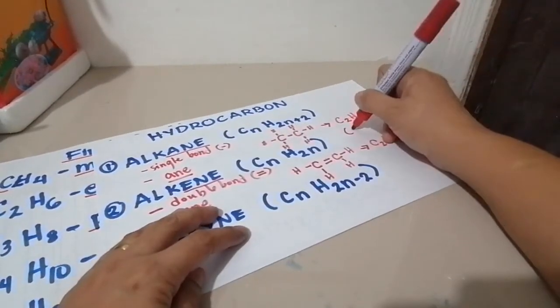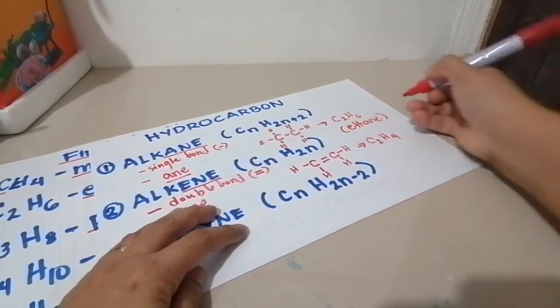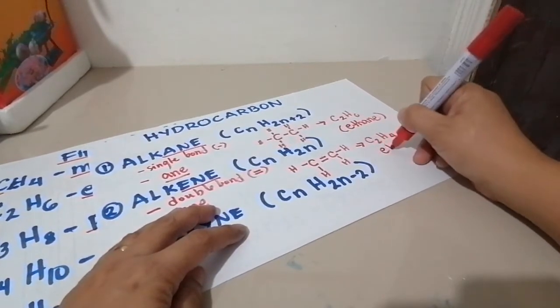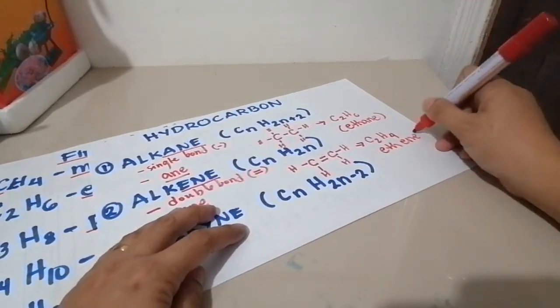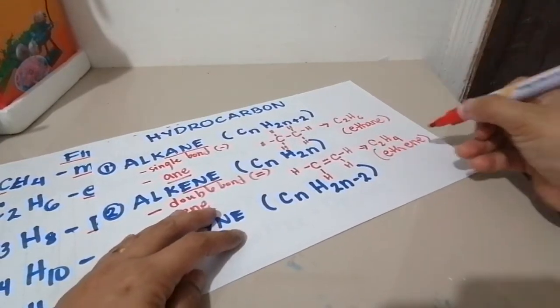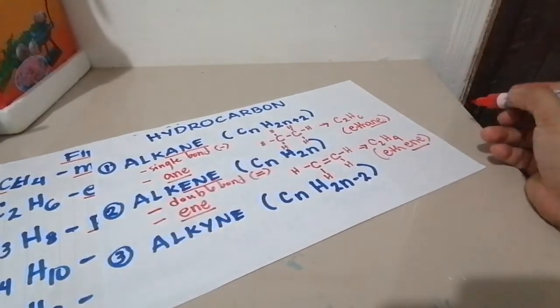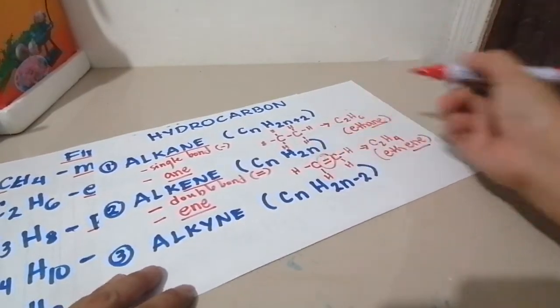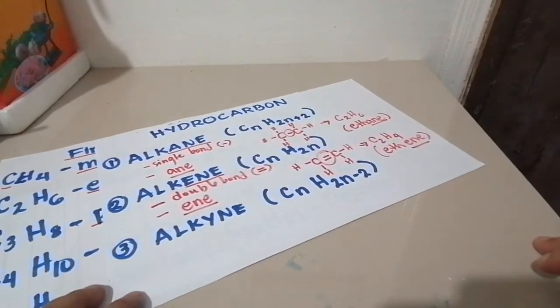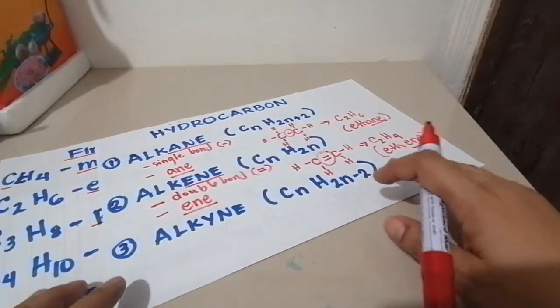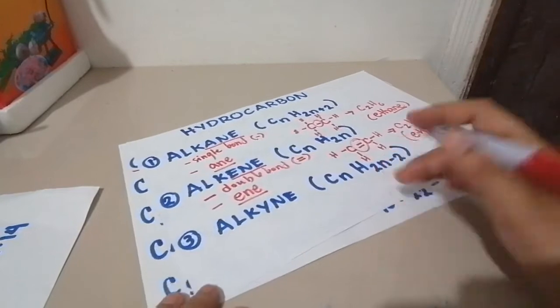Let's name this as ethane. This one is named as ethyne. Look at the difference. This is -ene. This one now is -yne. That is because of the presence of the double bond. And this one is the single bond.